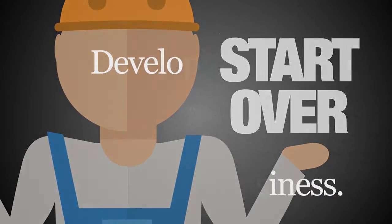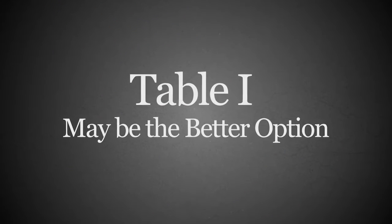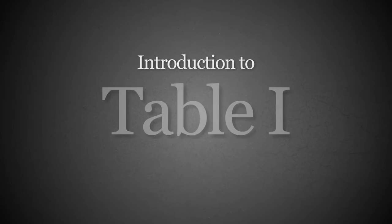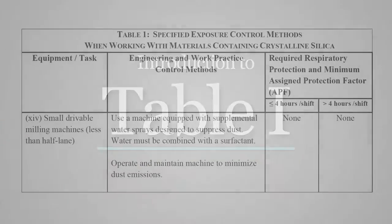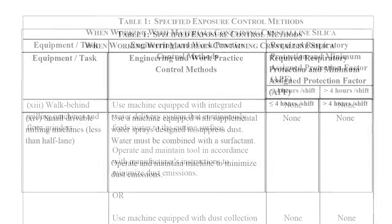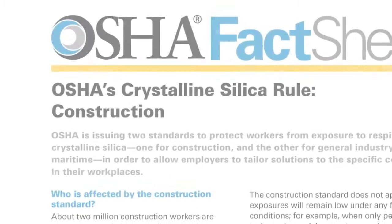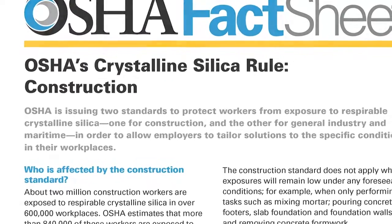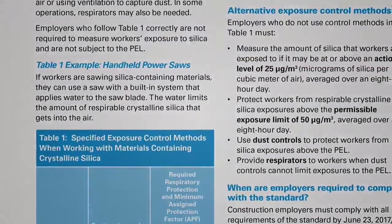For many businesses, this isn't going to be very practical, and that's why Table 1 may be the better option. Table 1 shows dust control methods for many common job site operations. According to OSHA's fact sheets, employers who follow Table 1 correctly are not required to measure workers' exposure to silica and are not subject to the PEL.